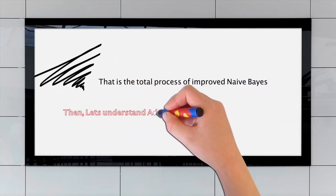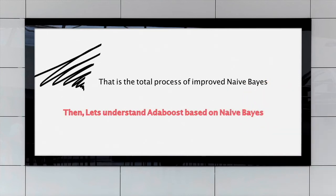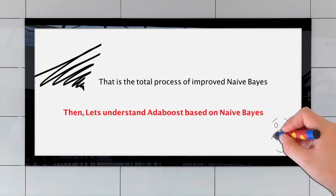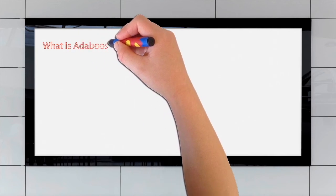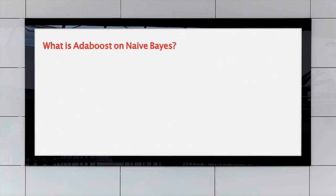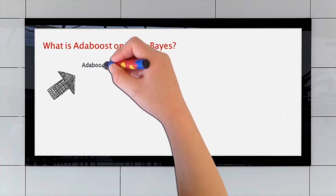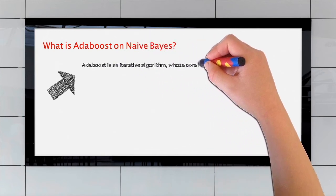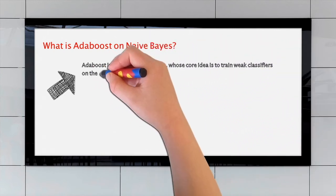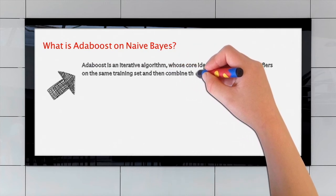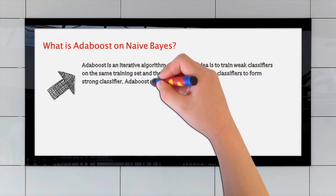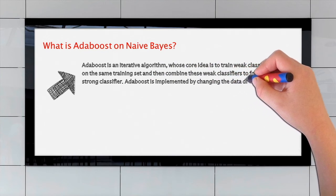And then, let's understand Adaboost based on Naive Bayes. Also, the question: what is Adaboost? Adaboost is an iterative algorithm. Its core idea is to train weak classifiers on the same training set, and then combine these weak classifiers to form a strong classifier. Adaboost is implemented by changing the data distribution.